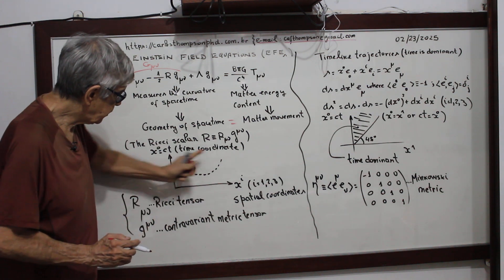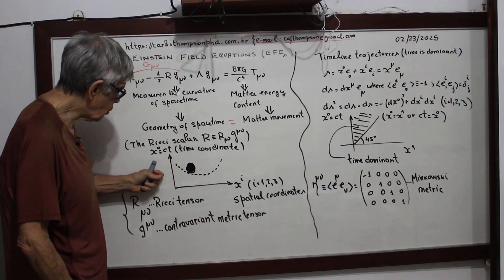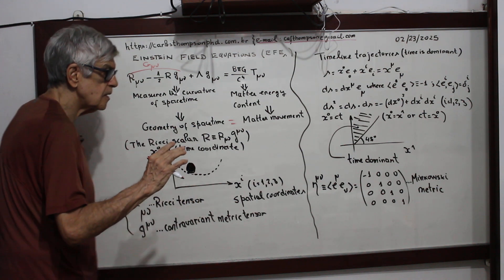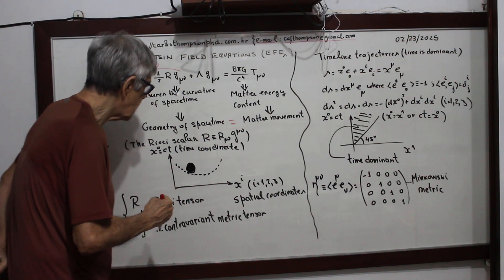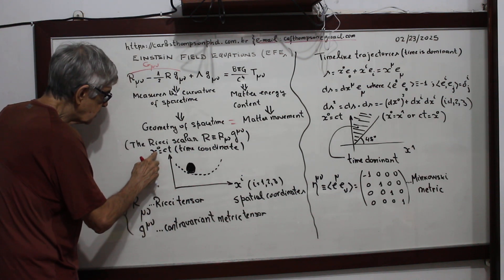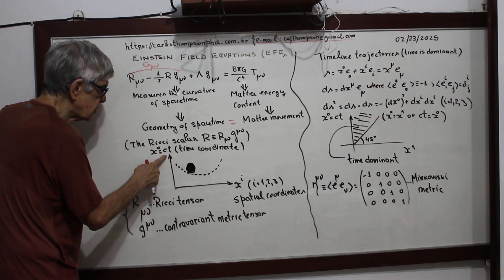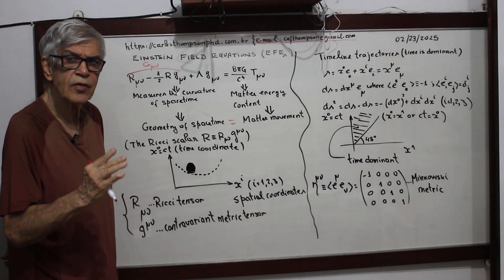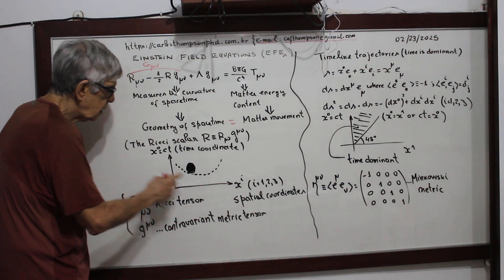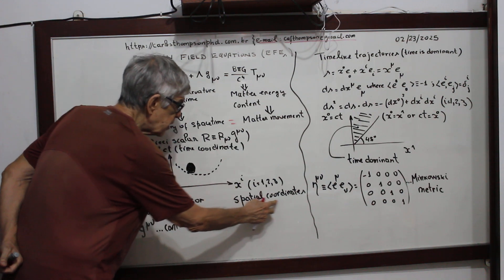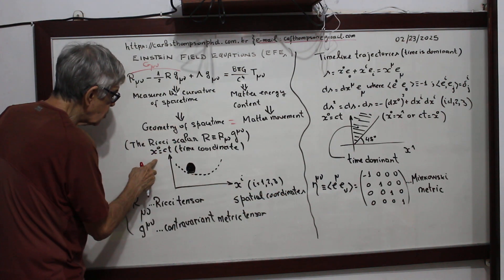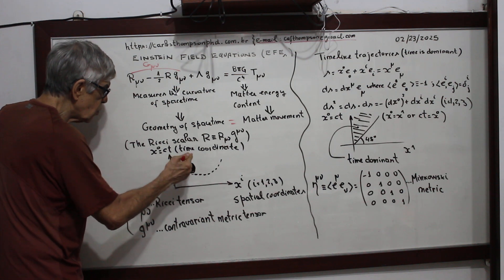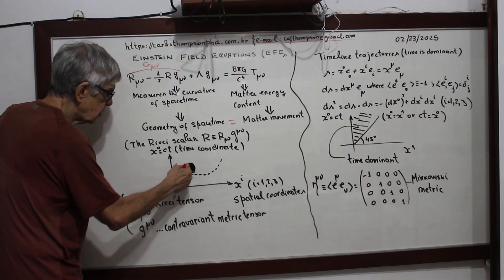This is the figure I showed last time. Here I'll put all the coordinates. This is the four-dimensional space-time. X-zero is CT, where C is the speed of light and T is time. So X-zero has the dimension of length, likewise X-i, the spatial coordinate. X-i is the spatial coordinate and X-zero is the time coordinate — very, very important.